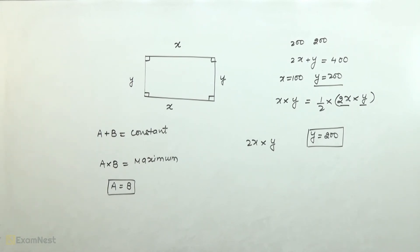We don't have to find the maximum area here, otherwise we would substitute 200 in place of 2X and 200 in place of Y, then we would also get the maximum area that the rectangle can have.